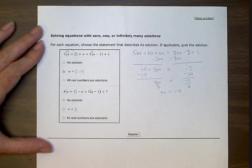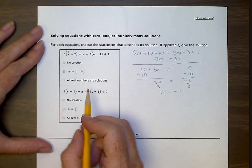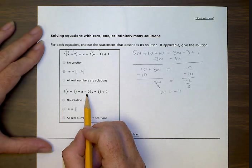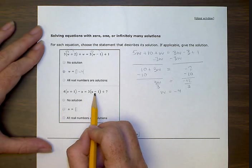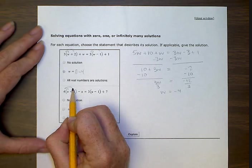All right, let's try the next equation. Four times (u plus one) minus u equals three times (u minus one) plus seven. So let's distribute again. That's the first step is to distribute.